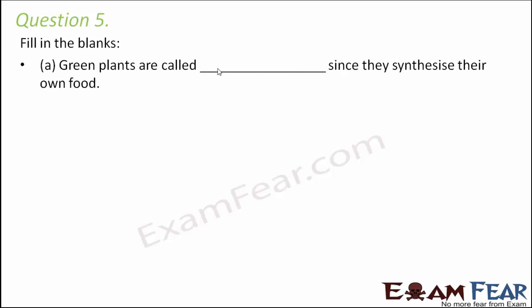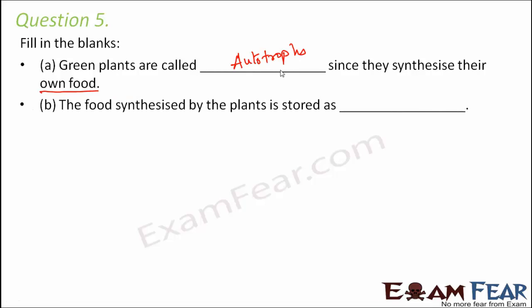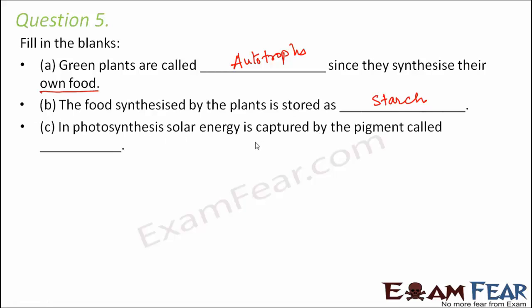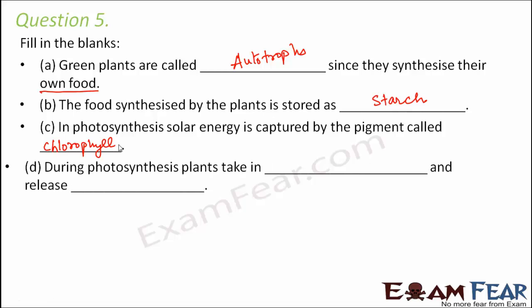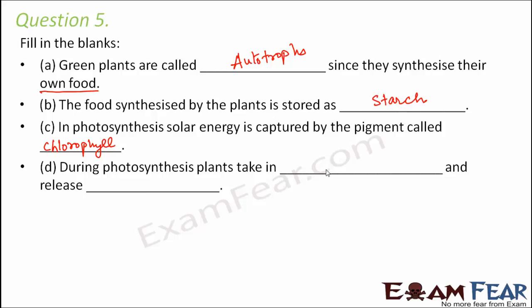Question number five: Fill in the blanks. Green plants are called autotrophs since they synthesize their own food. The food synthesized by the plants is stored as starch — the glucose produced gets converted into starch, which is a carbohydrate. In photosynthesis, solar energy is captured by the pigment called chlorophyll, and due to the presence of this pigment the leaves are green in color. During photosynthesis, plants take in carbon dioxide and give out oxygen.